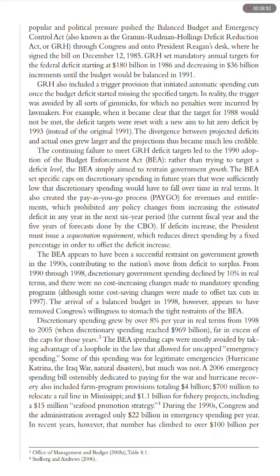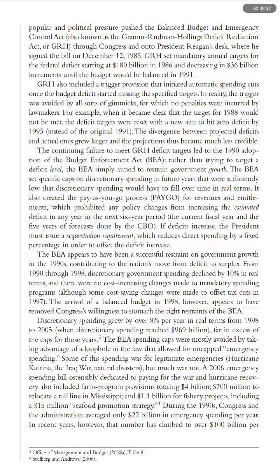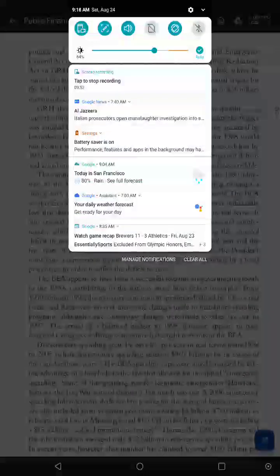The Budget Enforcement Act set specific caps on discretionary spending in future years that were sufficiently low that discretionary spending would have to fall over time in real terms. It also created the pay-as-you-go process, or PAYGO, for revenues and entitlements, which prohibited any policy changes from increasing the estimated deficit in any year in the next six-year period — the current fiscal year and the five years of forecasts done by the Congressional Budget Office. If deficits increase, the President must issue a sequestration requirement, which reduces direct spending by a fixed percentage in order to offset the deficit increase.